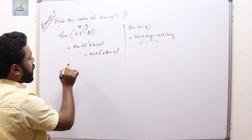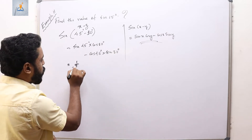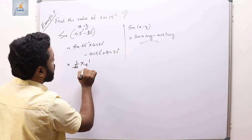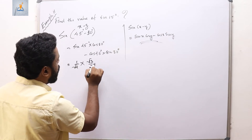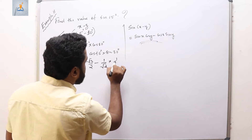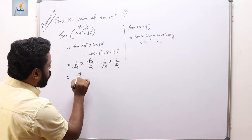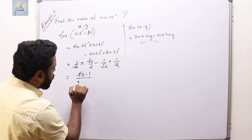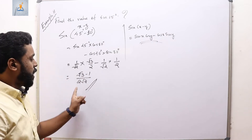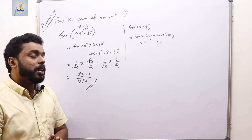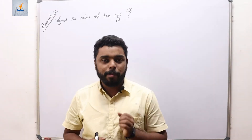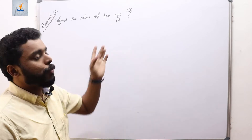sin(45°) = 1/√2, cos(30°) = √3/2, cos(45°) = 1/√2, sin(30°) = 1/2. So the result is (√3 − 1) / (2√2). The value of sin(15°) = (√3 − 1) / (2√2). Now we shall solve example number 12.